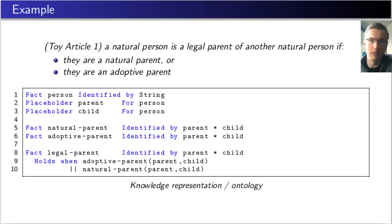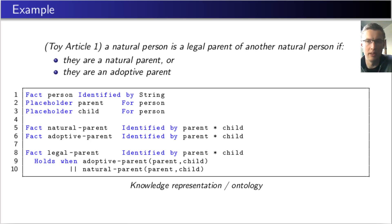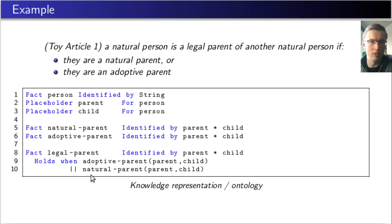To explain EFLINT specifications within the available time, I have included a toy example consisting of two toy articles. The first article says that someone is a legal parent if they are a natural parent or an adoptive parent. In the code fragment, we see a number of fact-type declarations that introduce the concepts mentioned in the article. Persons are identified by string values, and the concepts of natural parent and adoptive parent are formalized as binary relations between two persons. The placeholder declarations introduce alternative names for a type. The legal parent relation captures a so-called derived fact, whose validity is not postulated as part of a scenario but rather computed from other facts. In this case, the derivation clause reflects directly the two alternatives that form legal parenthood.